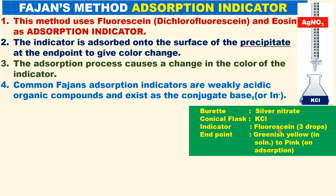Before the end point, the solution is green-yellow because there is no adsorption. At the end point, the indicator is adsorbed on the silver chloride precipitate to form a pink color. So the indicator is adsorbed onto the surface of the precipitate at the end point to give the color change from green-yellow to pink. The adsorption process causes a change in the color of the indicator.